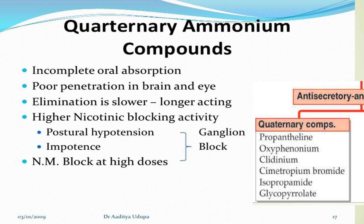Quaternary ammonium compounds — propantheline, oxyphenonium, clidinium, climatropium bromide, isopropamide, and glycopyrrolate — have incomplete oral absorption, poor penetration into the brain and eye, slower elimination, longer duration of action, and higher nicotinic blocking activity. Postural hypotension is important at higher doses due to ganglionic and neuromuscular block.